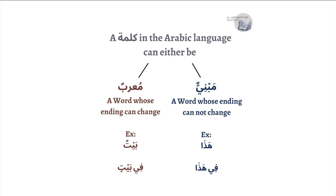A word in the Arabic language can either be Mabni or Mu'rab. Mabni means a word whose ending cannot change — like 'Hadha', which is always 'Hadha'. Mu'rab is a word whose ending can change: 'Baytun' becomes 'Baytin' because the Harf al-Jarr makes it Majrur. So Mu'rab means the word can accept I'rab — its ending changes from Raf' (Baytun) to Nasb (Baytan) to Jarr (Baytin).